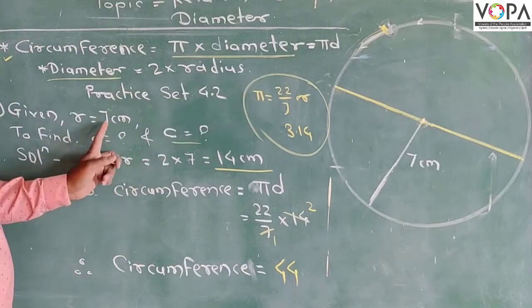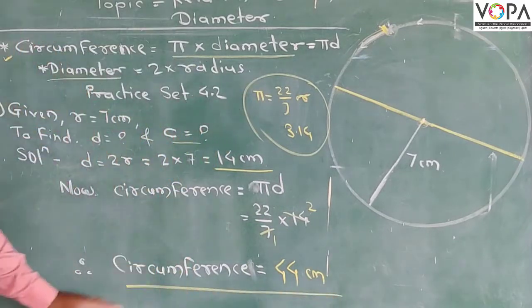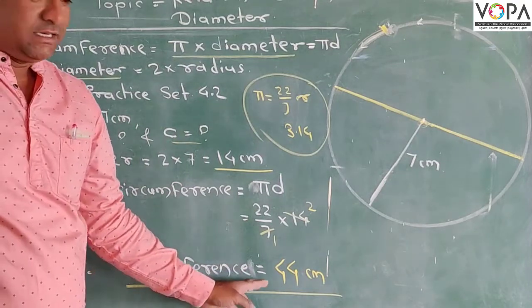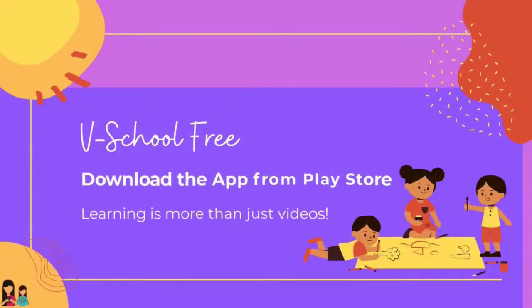So our final answer is: circumference of the circle is 44 centimeters.